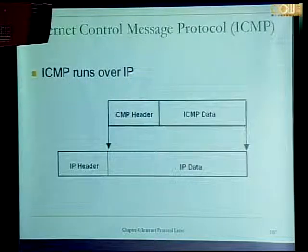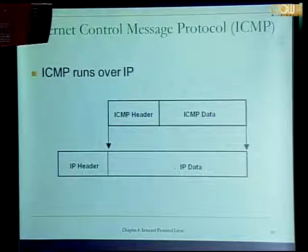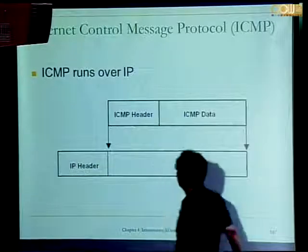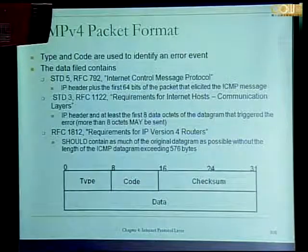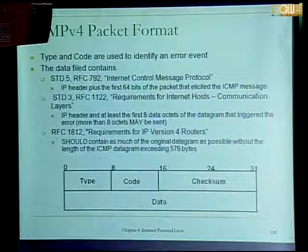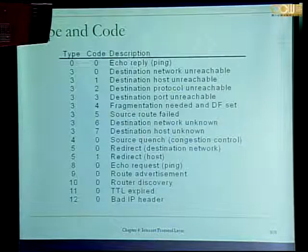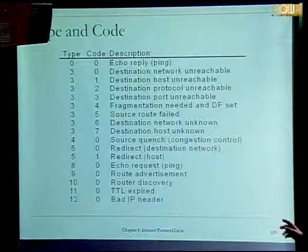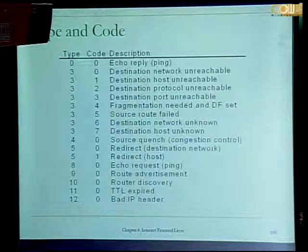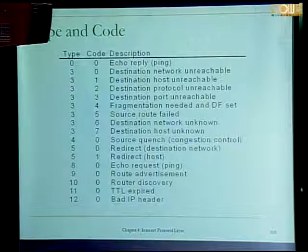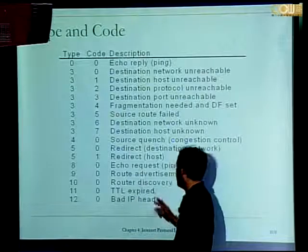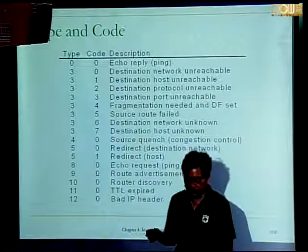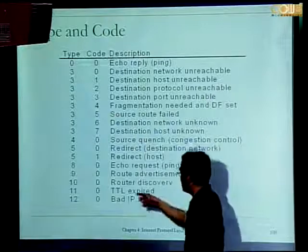The ICMP message is encapsulated in an IP header — it is the payload of the IP header — and contains an ICMP header. There are two fields, type and code, to identify what kind of error message it is. With the combination of type and code you specify the error. For example: bad IP header if the checksum is in error, or TTL expired if the TTL is decremented to zero — then you send this message to the source.